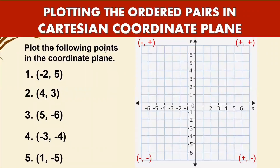Now we will plot the following points in the coordinate plane. Number one: negative two, five. Since x is negative and y is positive, it must be plotted in quadrant two. From zero, go to the left to negative two, then go up to positive five. Label your coordinate: negative two, comma five.